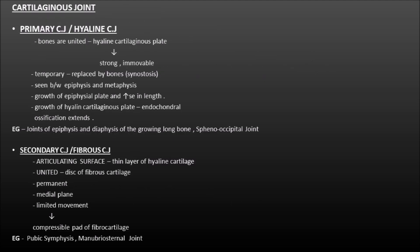Cartilaginous joint is bifurcated into two. The first is primary cartilaginous joint, also called hyaline cartilaginous joint. Bones are united by a plate of hyaline cartilage, making it very strong and immovable. These joints are temporary because at a certain age the cartilaginous plate is replaced by bone through synostosis. It is seen between epiphysis and metaphysis of long bones. Examples: joint of epiphysis and diaphysis of growing long bone, and the sphenooccipital joint. The second is secondary cartilaginous joint (fibrocartilaginous joint): articulating surfaces covered by thin hyaline cartilage, united by fibrocartilage disc, permanent, occurring in the median plane, permitting limited movement — seen in pubic symphysis and manubriosternal joint.